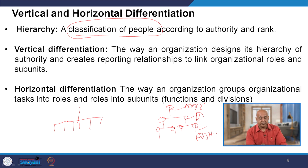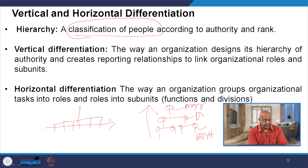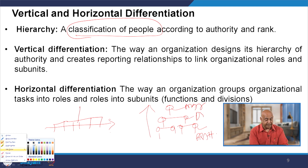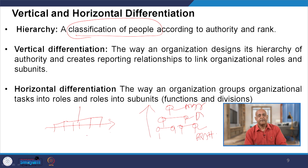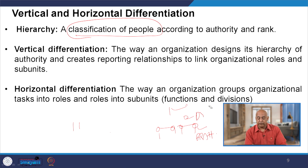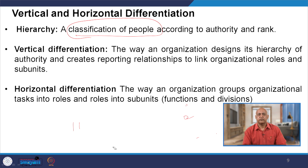The way an organization groups organizational tasks into roles and subunits, functions and divisions — both in horizontal and vertical structures — creates all the roles, responsibilities, functions, and divisions needed. As differentiation takes place, the reporting style changes, and as the reporting style changes, the differences in roles and relationships also change.